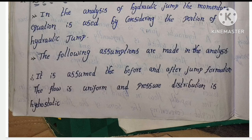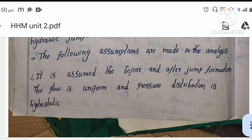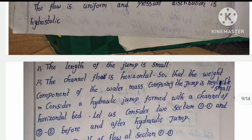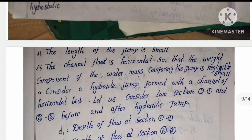It is assumed that before and after jump formation, the flow is uniform and the pressure distribution is hydrostatic. The length of the jump is assumed to be small. The channel floor is horizontal, so that the weight component of the water mass within the jump is negligible.